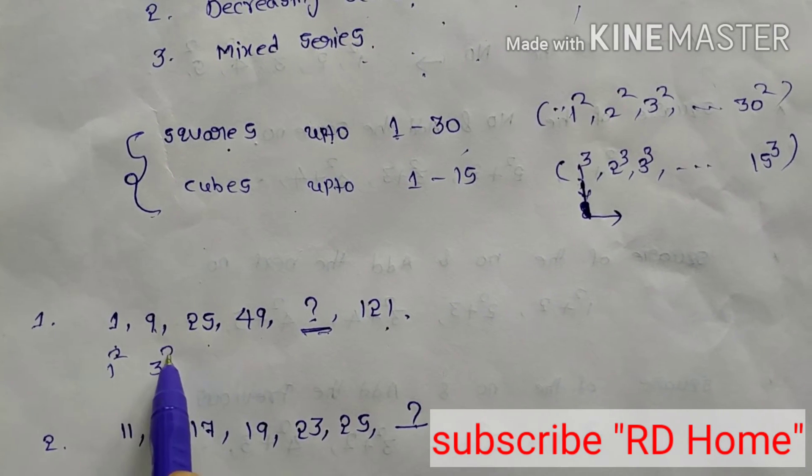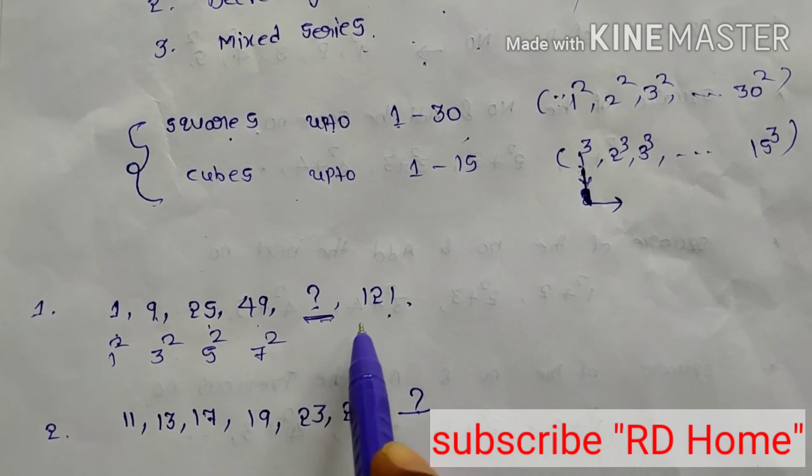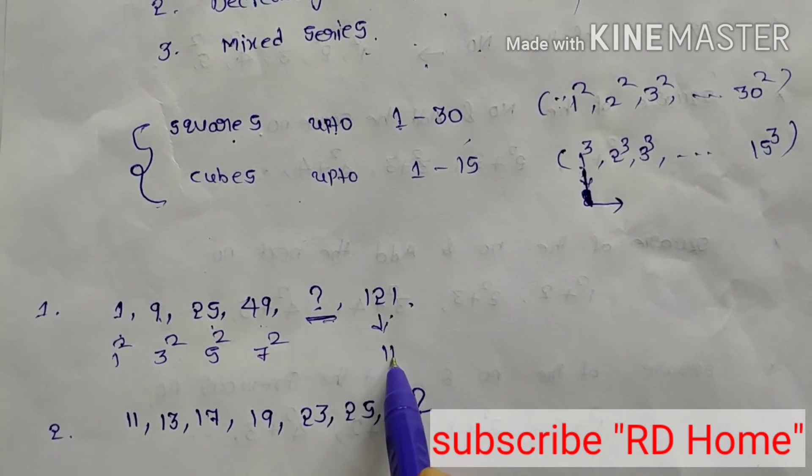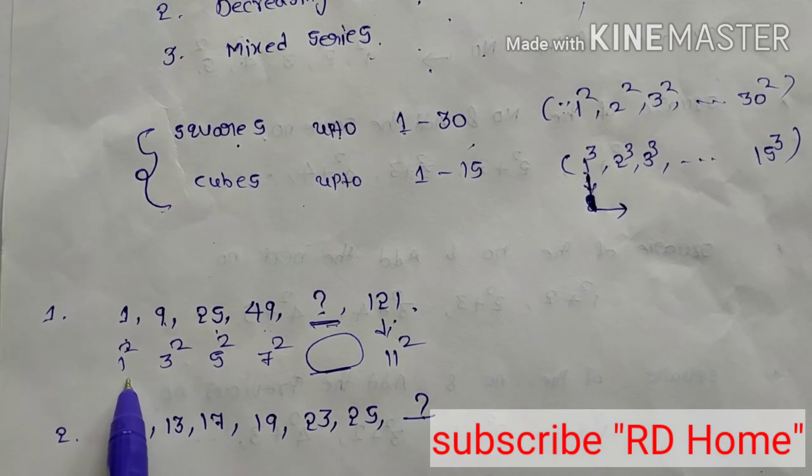Just by observation only you know that. 1 square, 3 square, 5 square, 7 square. Next is 11 square.